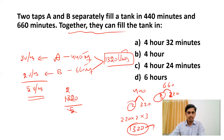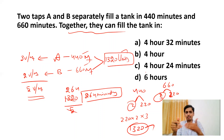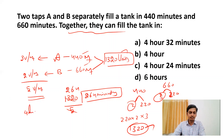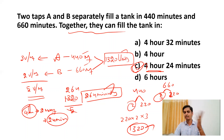We need to convert 264 minutes to hours. We know 4 hours = 240 minutes, so the extra time is 264 − 240 = 24 minutes. Therefore the answer is 4 hours and 24 minutes. Rather than dividing 264 by 60, it's easier to calculate mentally: 4 hours and 24 minutes is our answer.